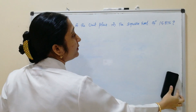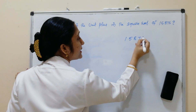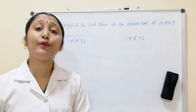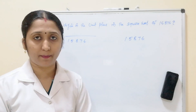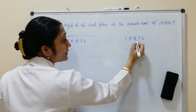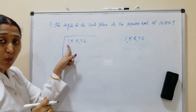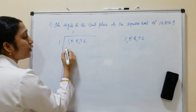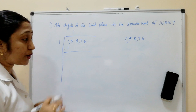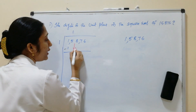So the square root of 15876 — first we group the number from the unit place in pairs: 76, 58, and 1. The first group is 1. Which number squared gives 1? 1 × 1 = 1. Subtracting gives 0. Next, we bring down the next pair 58.